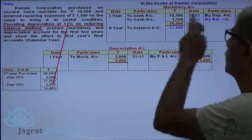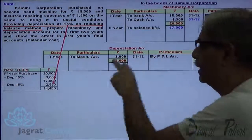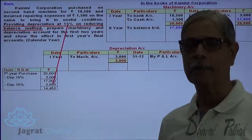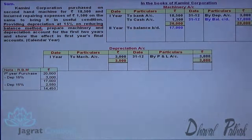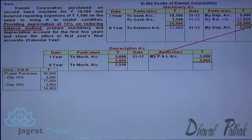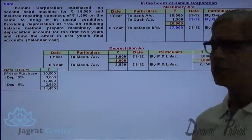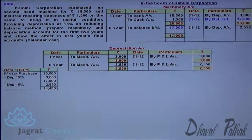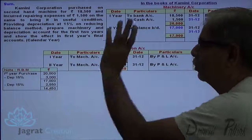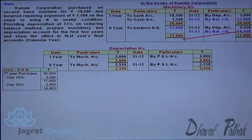The journal entries for the second year are: depreciation account debit to machinery account credit for $2,550; and profit and loss account debit to depreciation account credit, to transfer depreciation and close the depreciation account. The total of the debit side of the machinery account is $17,000. Deducting $2,550, the closing balance works out to $14,450, as shown. This closing balance becomes the opening balance for the next year.